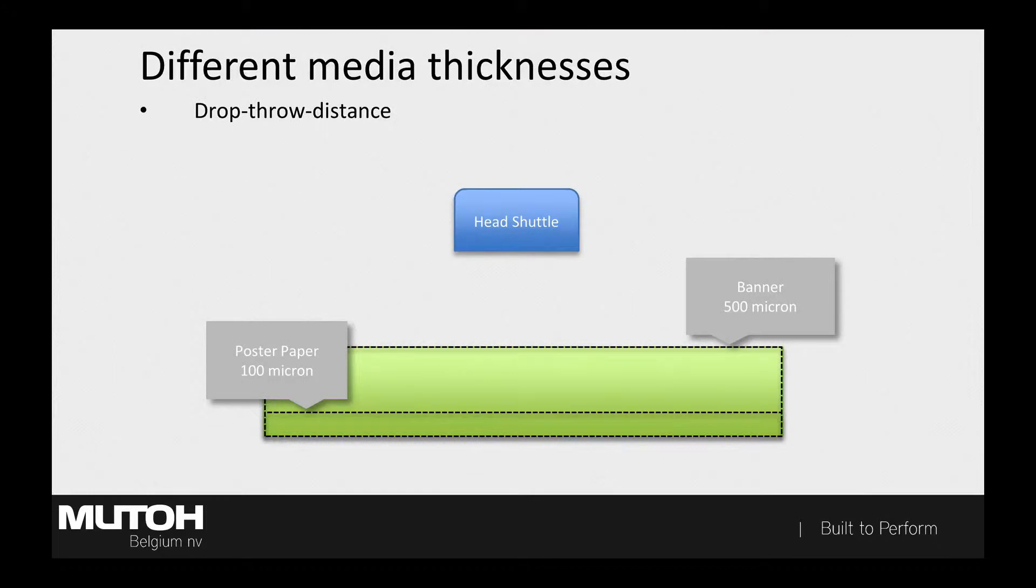Now that doesn't seem like a real challenge, except that the head height can't compensate for different thicknesses because we're having these fixed head positions. This means that the gap between the print head and the media can vary. In inkjet terms, we also speak about the drop throw distance. It is the distance at which a drop travels from the point where it's leaving the print head nozzle until it hits the surface of the media. For a 100 micron poster paper, this distance will be longer than for a 500 micron banner because the gap is 400 micron bigger.